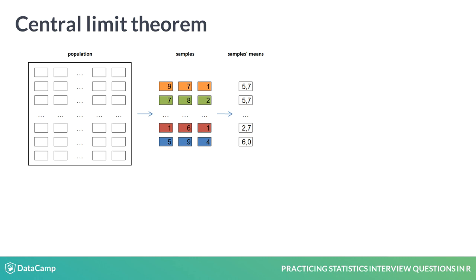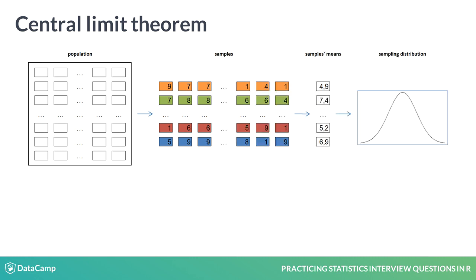For each of the samples you calculate the mean of the scores. The statement of the Central Limit Theorem says that the distribution of the sample's means will approximately take the shape of a bell curve around the population's mean. If you increase the sample size, the sampling distribution converges to the shape of a normal distribution.